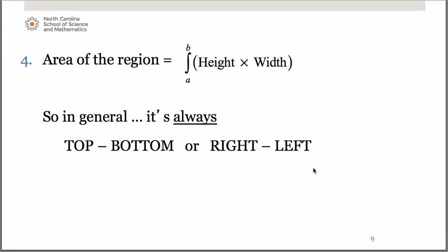So basically then, your area of the region is going to be the integral from a to b of the height times the width. That's where the f of x minus g of x dx comes from. A really good guiding rule to remember, and especially as we continue on into other lessons after this, top minus bottom, right minus left.